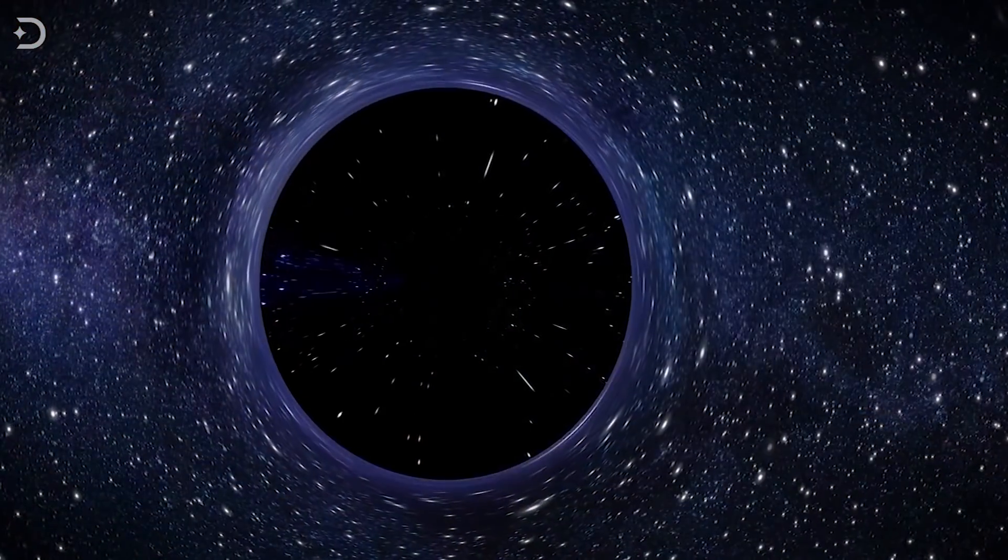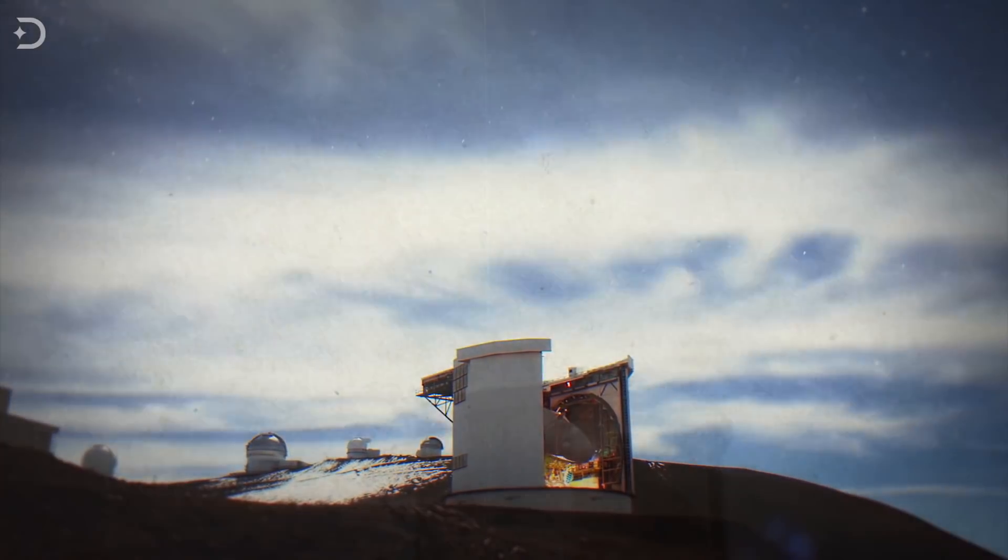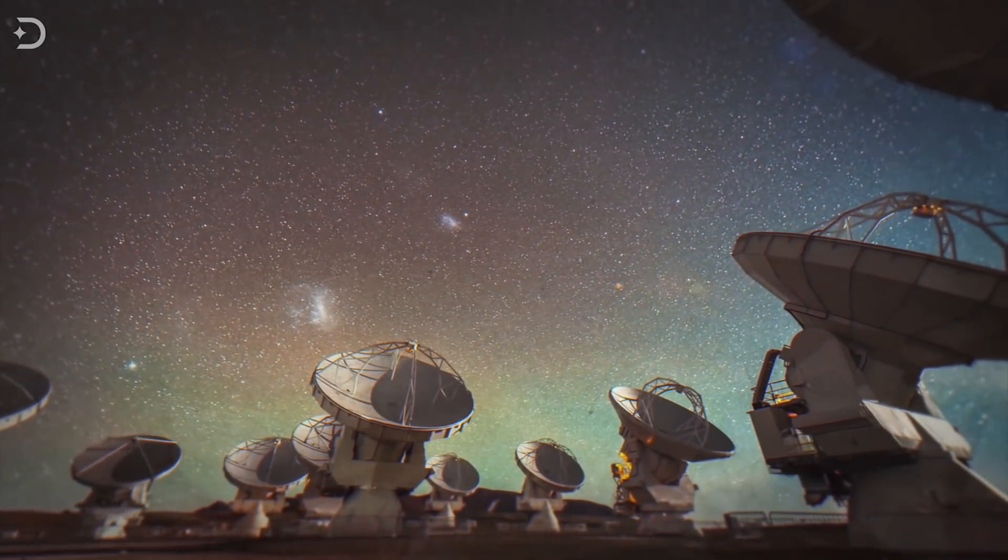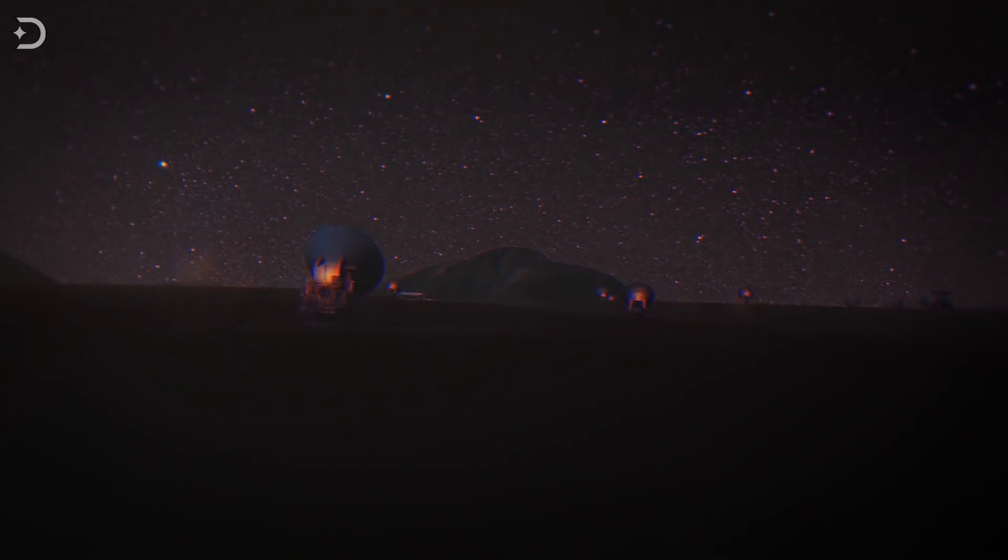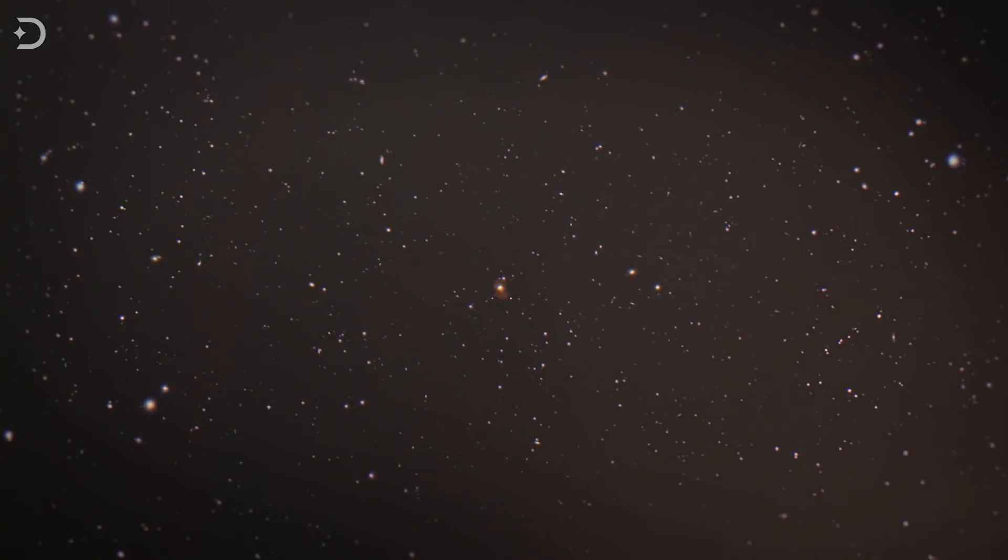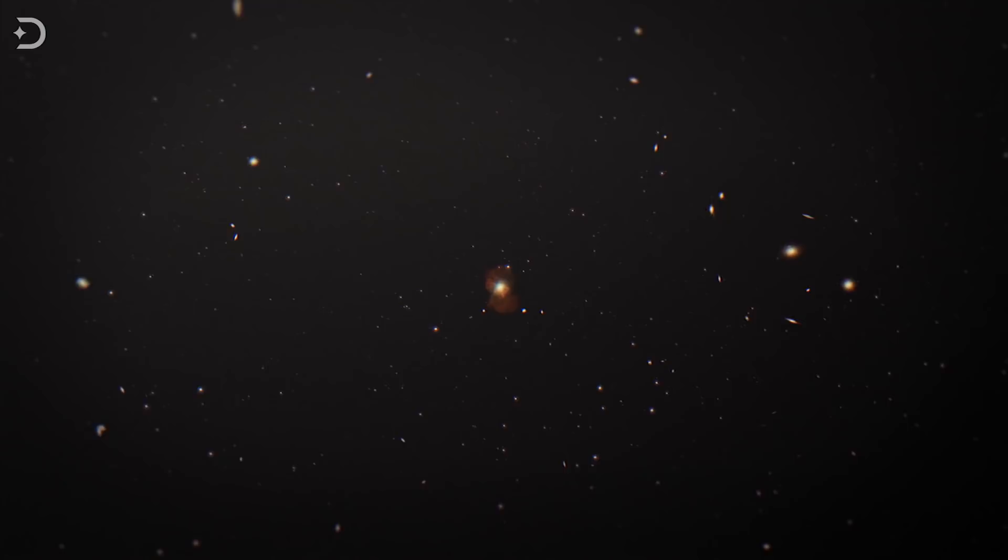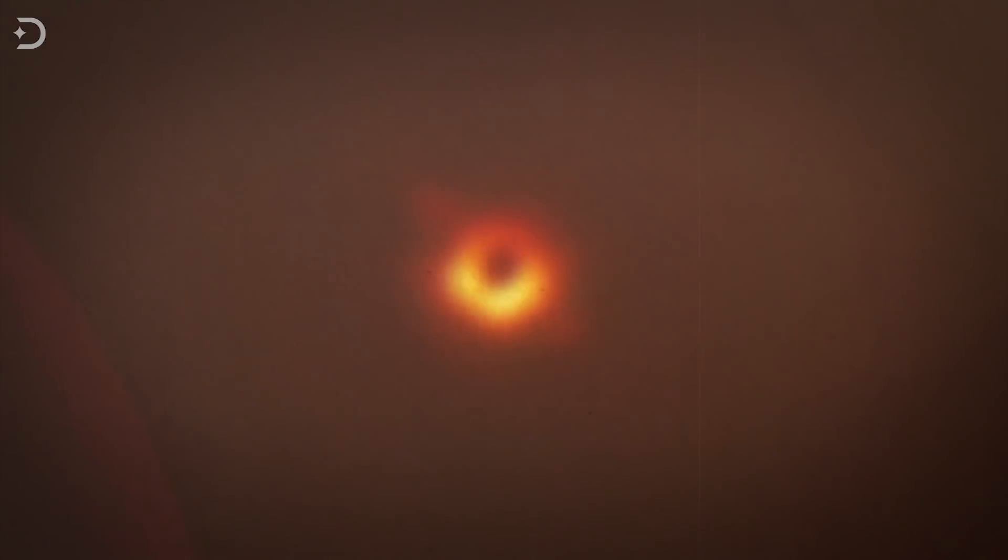For a long time, we could only guess what a black hole must really look like, since it's nearly impossible to image an object that light cannot escape from. But technology has been advancing by leaps and bounds, and on April 10, 2019, astronomers obtained the first-ever image of a black hole located in a galaxy called Messier 87.